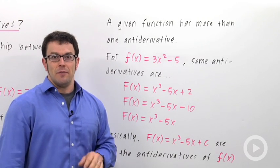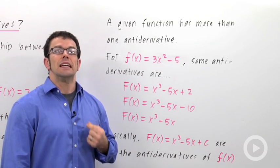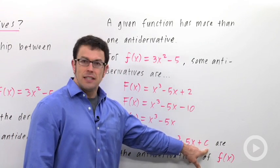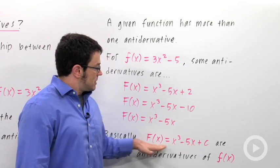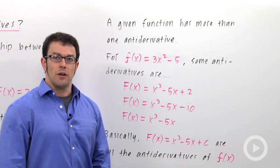So in general, there are infinitely many antiderivatives of a given function. If it has an antiderivative, it has infinitely many, and so we usually represent that fact with a plus c. This c means it's a constant, it could be any value, any real number value. So any function of this form will be an antiderivative of 3x squared minus 5.